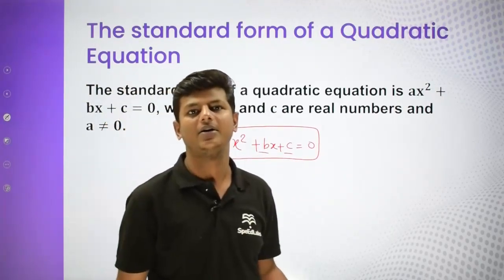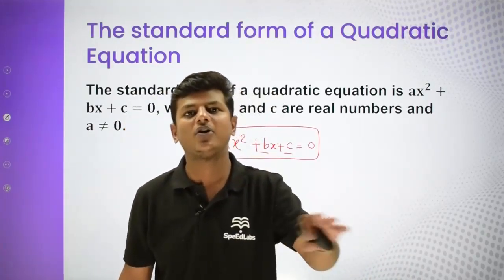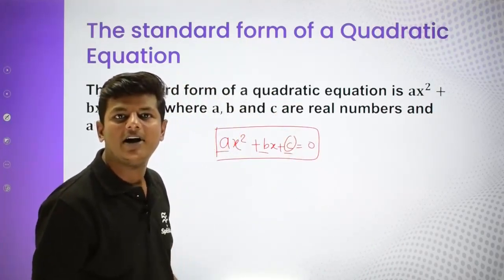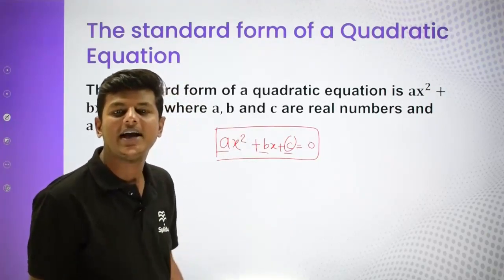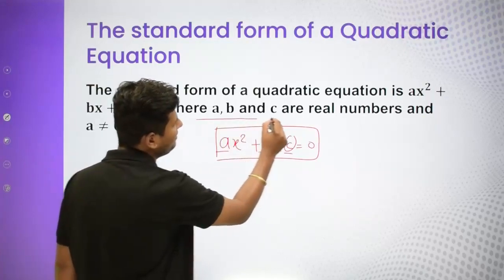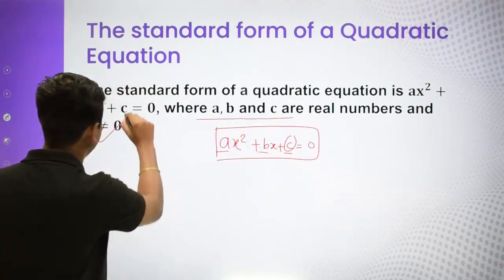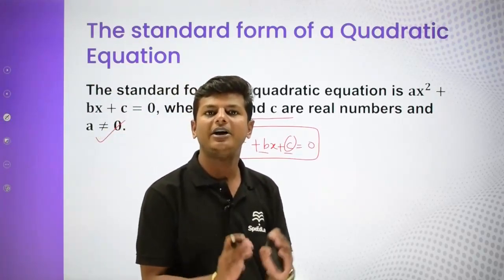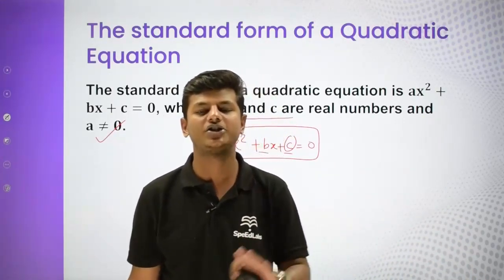In this standard form, a, b, and c are real numbers — there are real numbers, variables, and constants. The variable parts are x² and x, while a, b, c are the real number coefficients. Where a, b, c are real numbers and a is not equal to zero. So it is clear that a quadratic equation is a quadratic polynomial equated to zero or a constant.